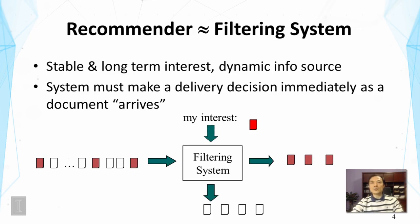Recommending useful items to people is like filtering out useless articles. In all cases, the system must make a binary decision. There is typically a dynamic source of information items, and with some knowledge about the user's interest, the system makes a decision about whether an item is interesting to the user, and if so, recommends it.